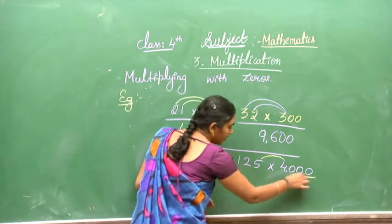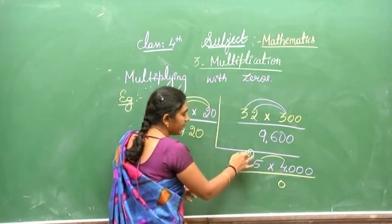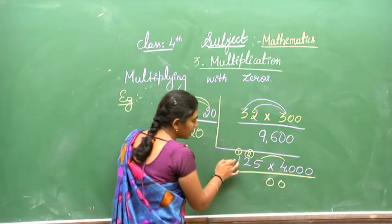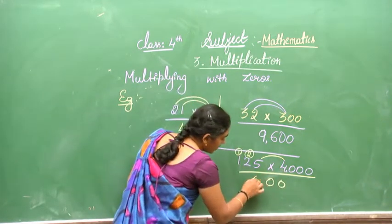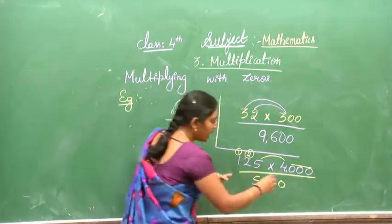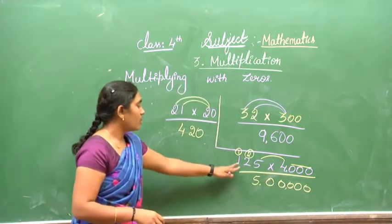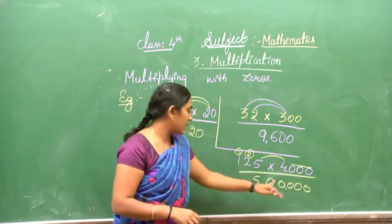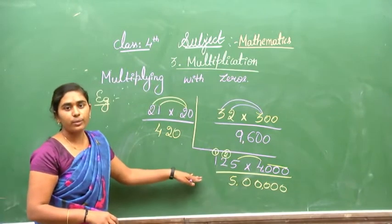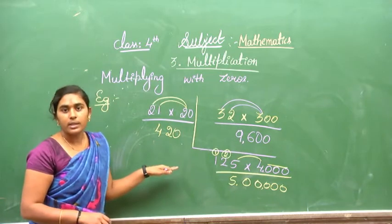4 times 5 is 20 — write 0, carry 2. 4 times 2 is 8, plus 2 is 10 — write 0, carry 1. 4 times 1 is 4, plus 1 is 5. Then append three zeros for the 4,000. So 125 multiplied by 4,000 gives an answer of 5,00,000 — five lakh. This is the easy multiplication method.